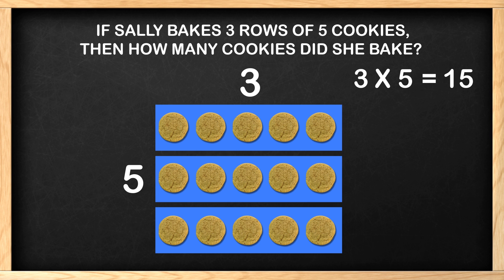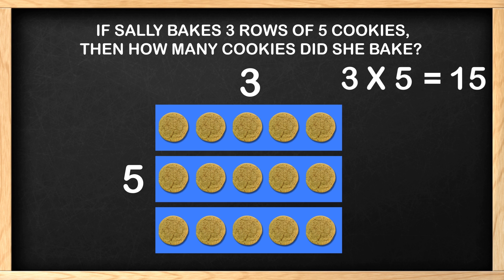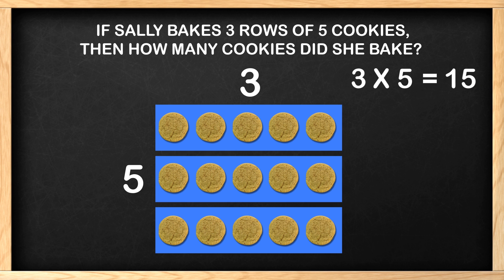She baked fifteen cookies in all. Instead of counting each cookie, we could also use our multiplication skills to know that three times five equals fifteen. Awesome! Let's look at another problem before I eat all these cookies.